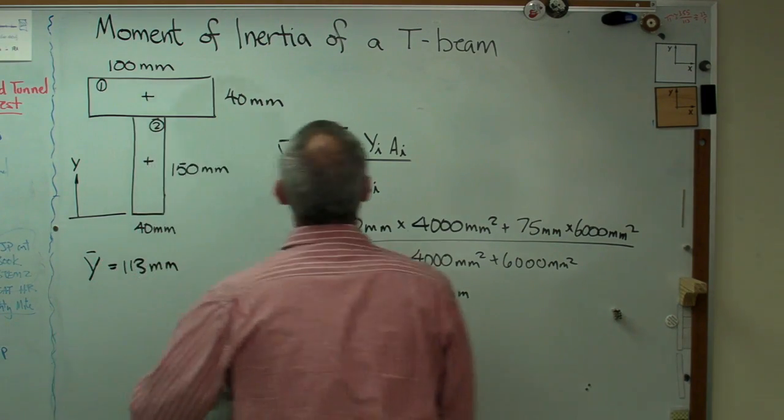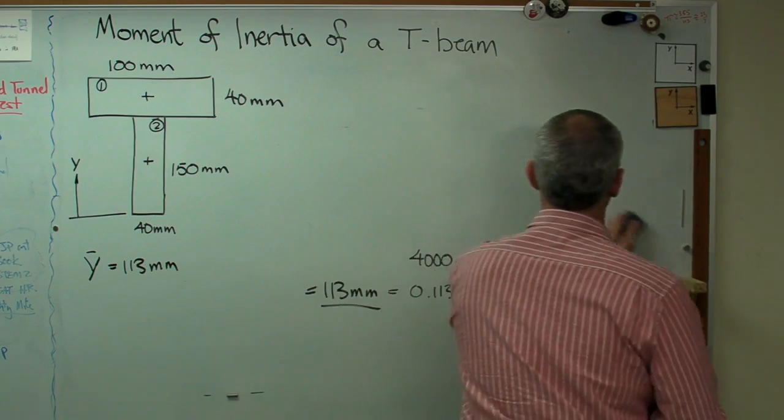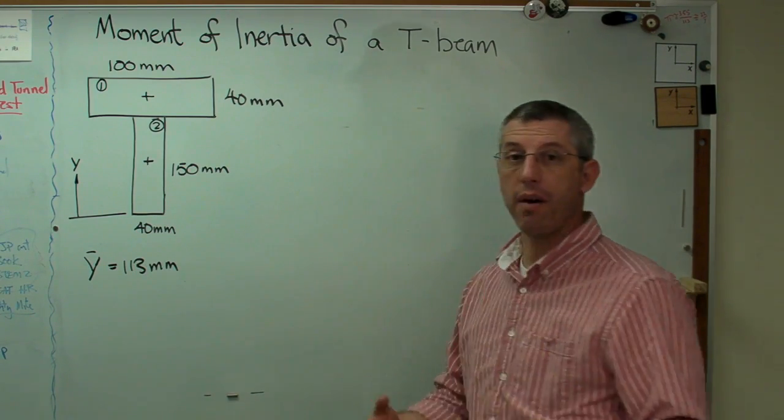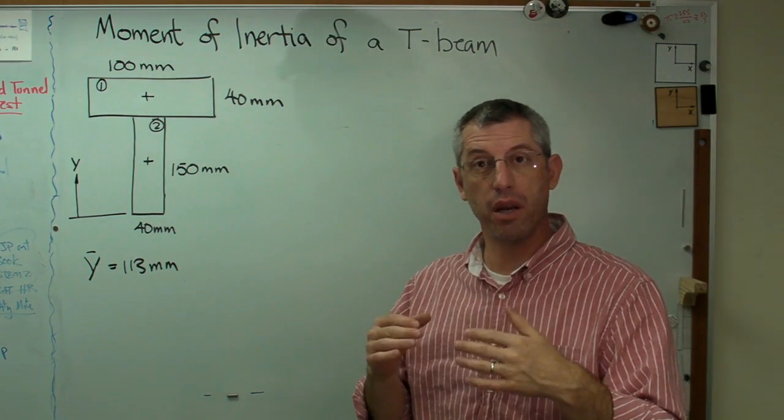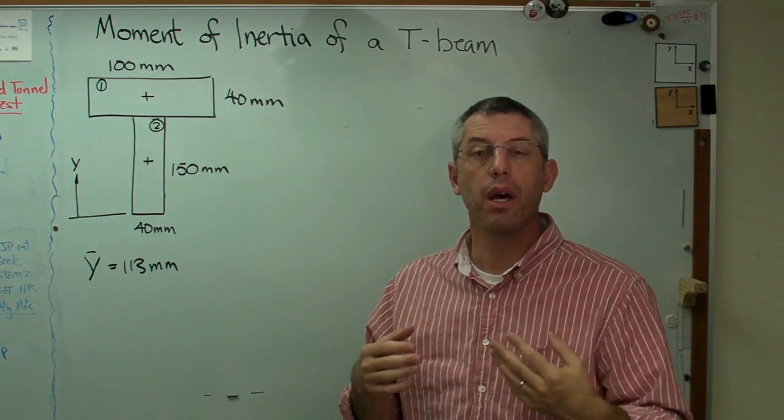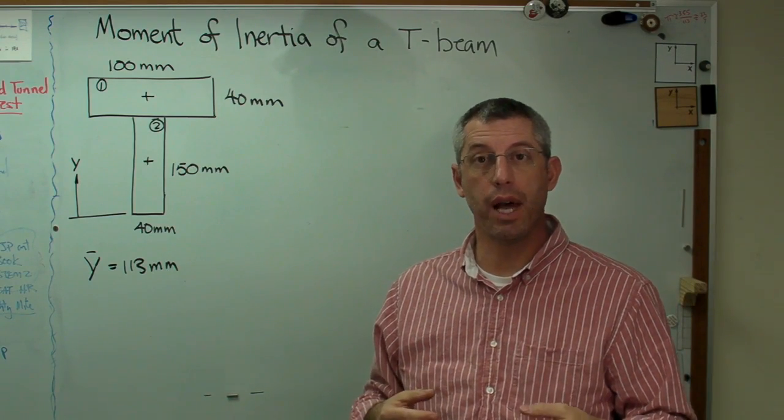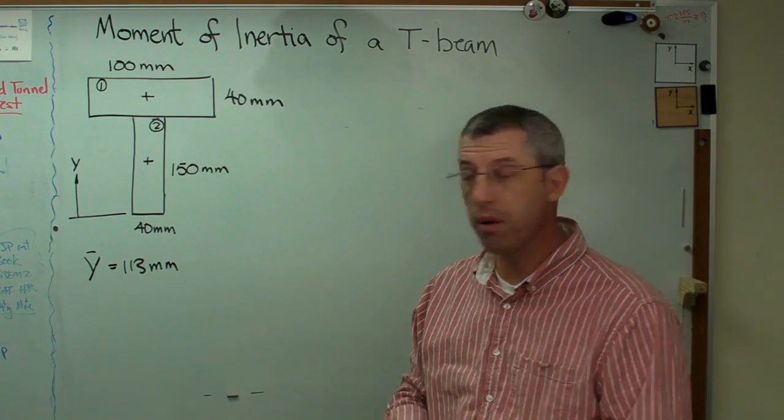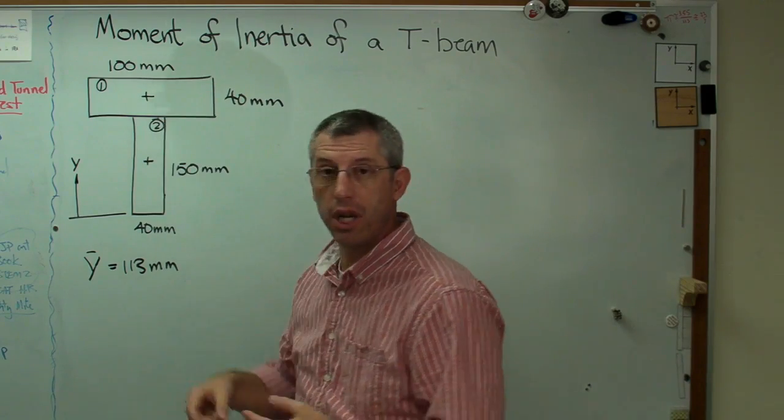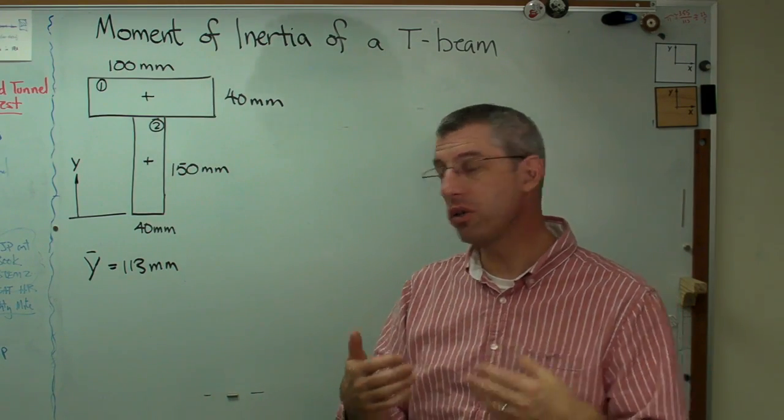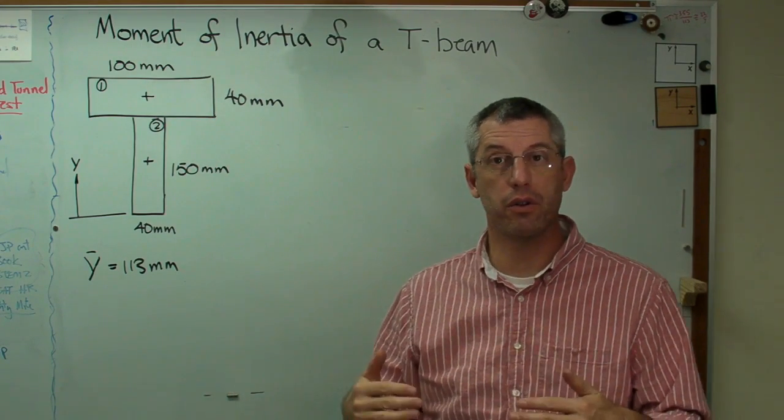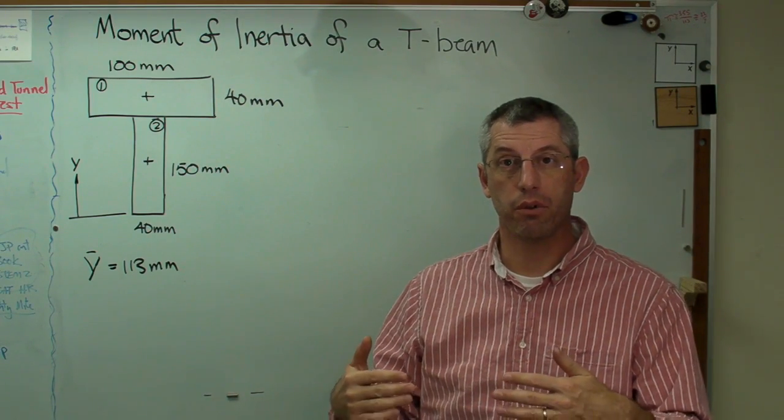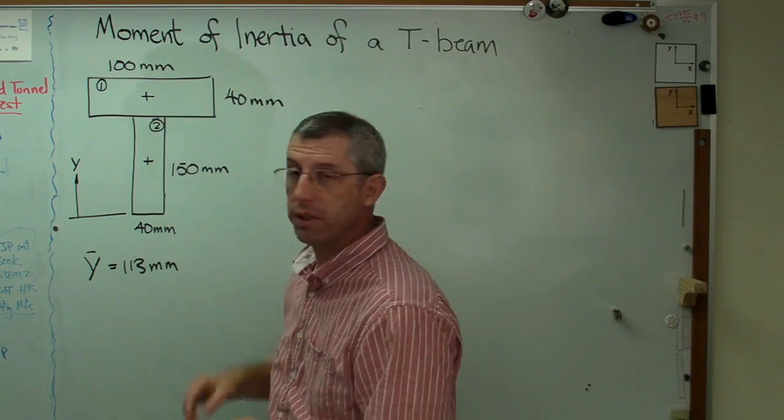Now that we know where the centroid is, now it's time to find the area moment of inertia. When you have a shape made up of smaller boxes like this, a large complicated shape made of smaller simpler shapes, the area moment of inertia has two components in it. It's got the area moment of inertia of the individual shapes plus a correction term or an additional term to account for the fact that the centroid of the shape is not on the centroid of the entire structure, the centroid of these little boxes.